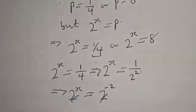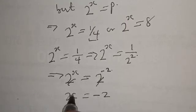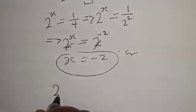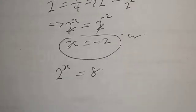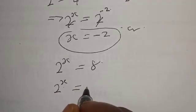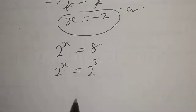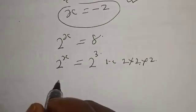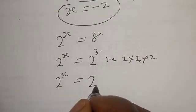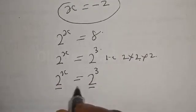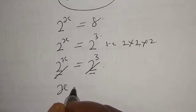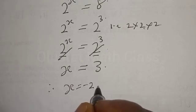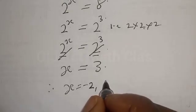Since we have the same base, we can equate the exponents. So x equals negative 2. Also, 2 raised to power x is equal to 8, and 8 is equal to 2 raised to power 3. Therefore x equals 3. The values of x are x equal to negative 2 or x equal to 3.